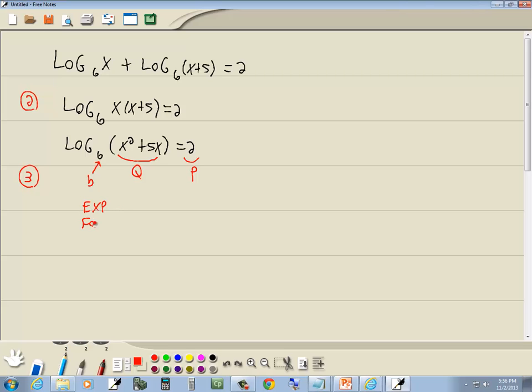Now, exponent form looks like this: b to the p is equal to q. So we plug in what we just identified. We said b was 6, so we've got 6 to the p power, and p is 2. So 6 squared equals q, which is x squared plus 5x.